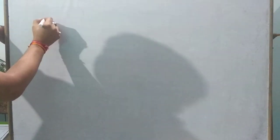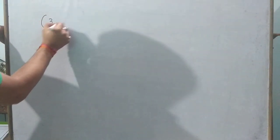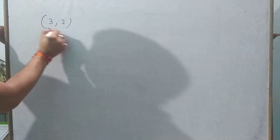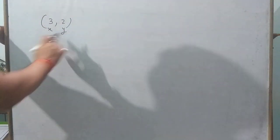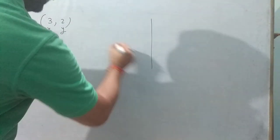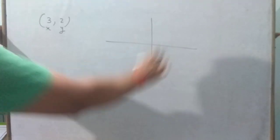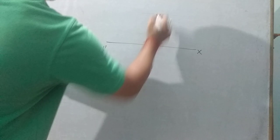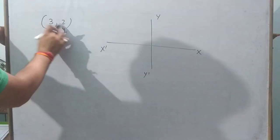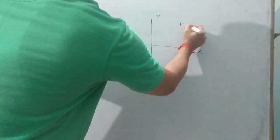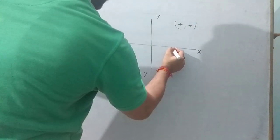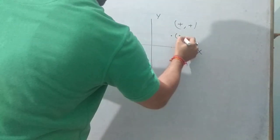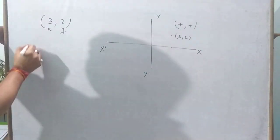As you know from class 9, suppose a point (3, 2) is given. X is 3 and Y is 2. When you plot this point in the plane, this is known as the Cartesian plane. Both values are positive, so the point lies in the first quadrant. This point is 3 on the X-axis and 2 on the Y-axis, giving us the point (3, 2).